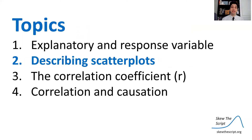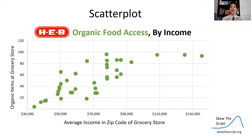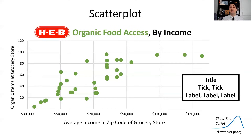We can visualize the data that Linda collected in a scatter plot. Each data point is a store — the X coordinate represents the average income in the area of that store, and the Y coordinate is the amount of organic items offered in that store. As always: title, label, tick marks — the scatter plot has a title, labeled X and Y axes, a scale, and labeled units. At a scatter plot, you don't necessarily need to start at zero — you just want to give a good visual of the full data set.